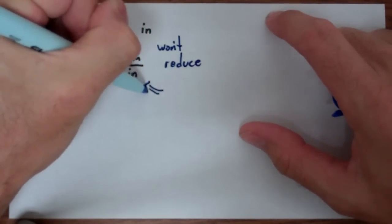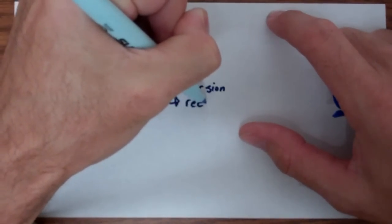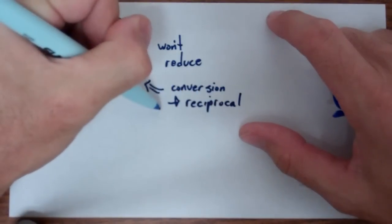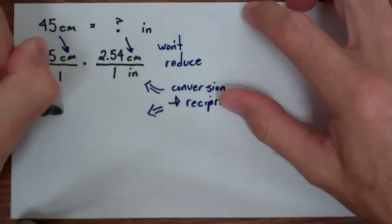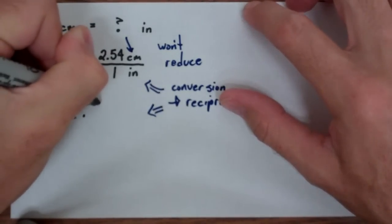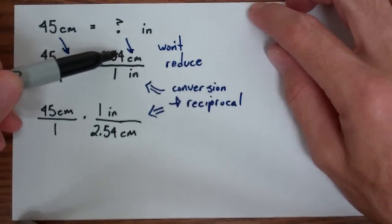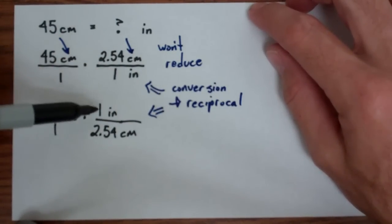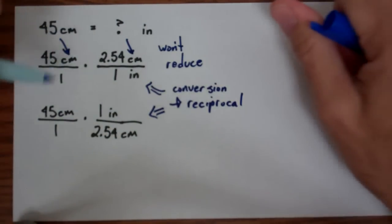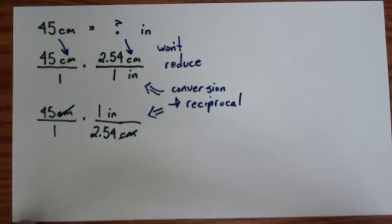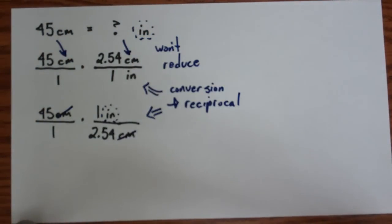So what we do is we'll take this conversion and take its reciprocal. What you really want is 45 centimeters over 1 times 1 inch over 2.54 centimeters. Just take the numerator and put it in the denominator, take the denominator and put it in the numerator. So the conversion requires the reciprocal. And now the centimeters reduce with the centimeters dimensionally. The only dimension I have left over is the inches, which is exactly what I want.